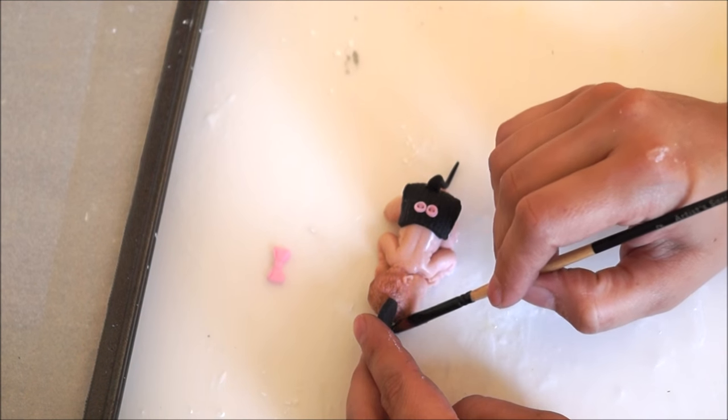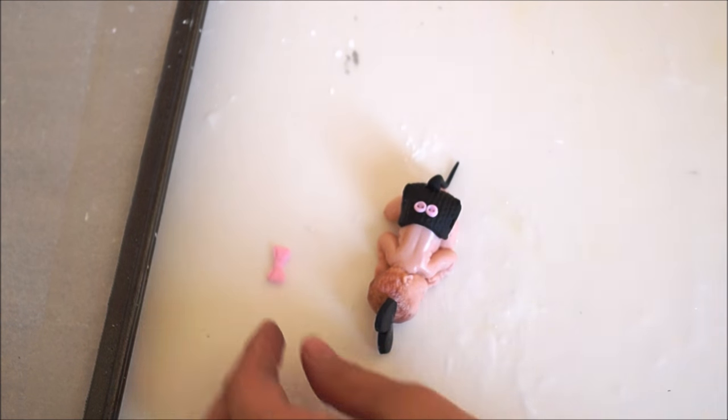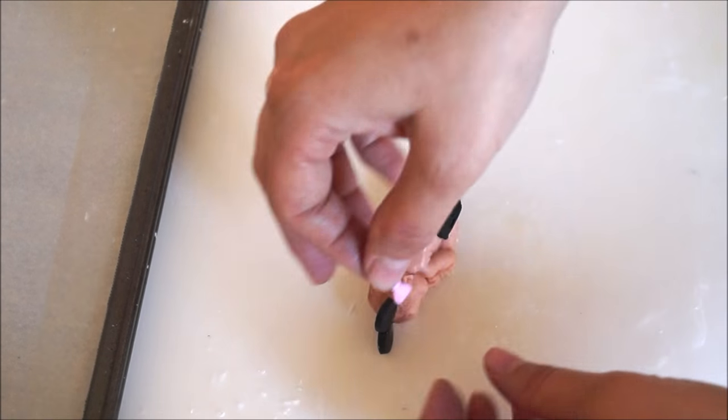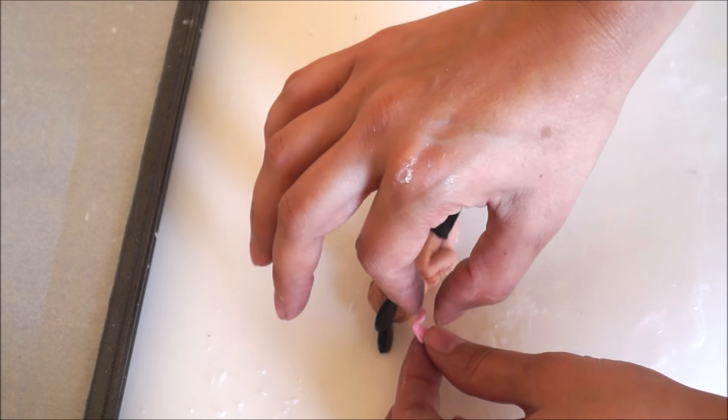To finish the look, glue a small bow at the bottom of the ears. And there you go, this is how I create my little Minnie Mouse cake topper. Hope you enjoyed the video and thanks for watching.